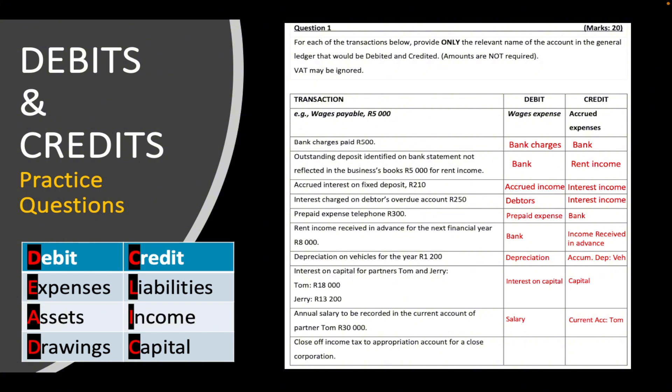Number ten: close off income tax to the appropriation account for a close corporation. Income tax is an expense account — expenses go on the debit side, but when closing off we put it on the credit side. We debit the appropriation account and credit income tax. If it were income being closed off, you would debit the income account and credit the appropriation account — the opposite treatment.